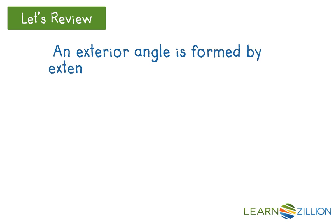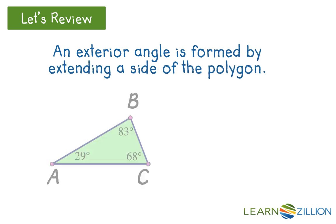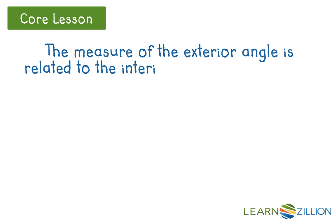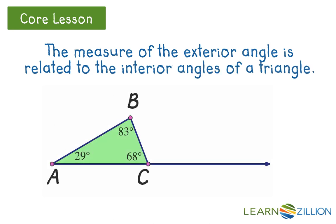An exterior angle is formed by extending a side of a polygon. The measure of the exterior angle is related to the interior angles of a triangle. Let's see why.